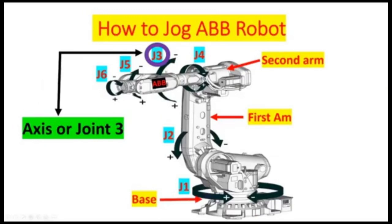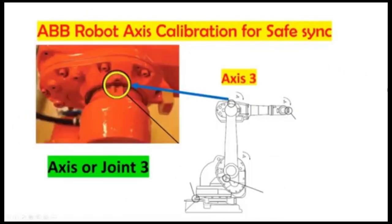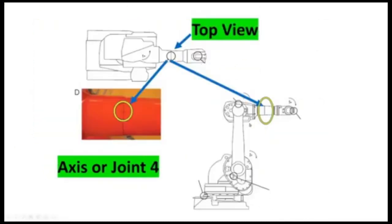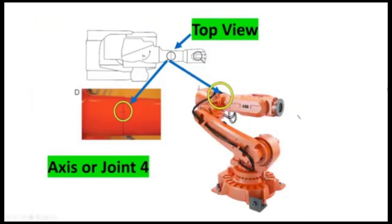This is axis three. And this is the actual location on the mechanical drawing and the actual location on the robot. Axis four — this is the top view. And this is the actual location of axis four on the robot.